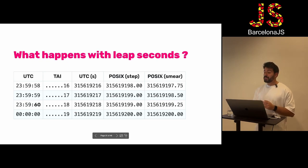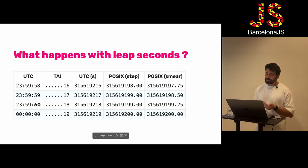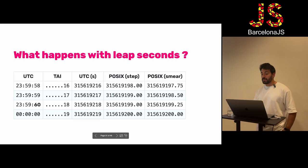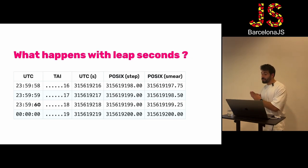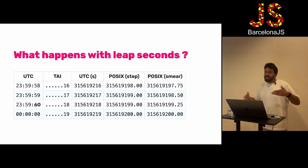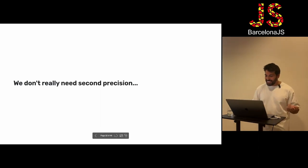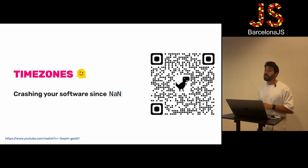Most systems do 'smearing' — slowing down the clock to guarantee different timestamps for every second. Instead of staying at 98 seconds, you go to 97-something, then jump gradually to the right value. During this window, the clock is slowed down. The implication is that not all seconds last the same — seconds have different durations. As front-end developers we don't need second-level precision, but if you require precision like GPS, you probably need a different time system.